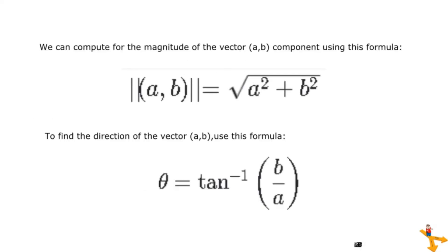We can compute for the magnitude of the vector and find its direction using the formulas shown. For the direction, we use theta equals arctan of B over A.